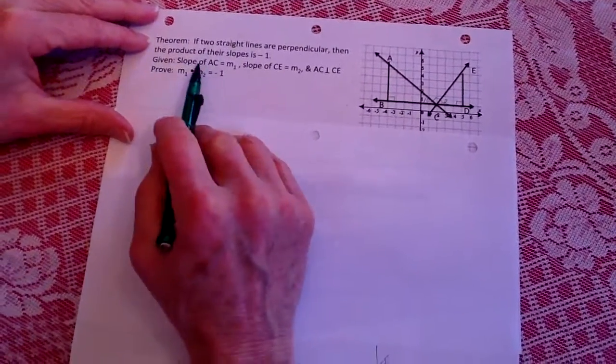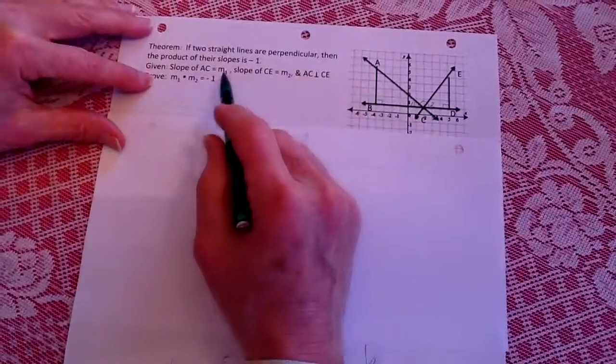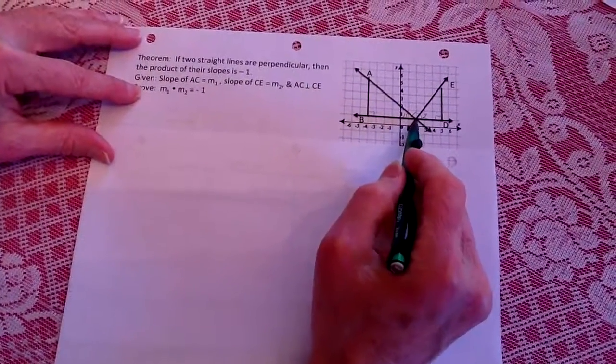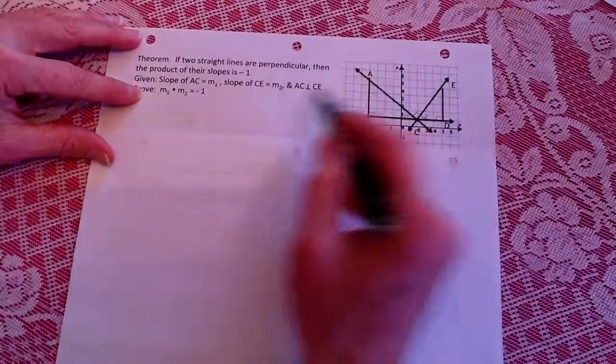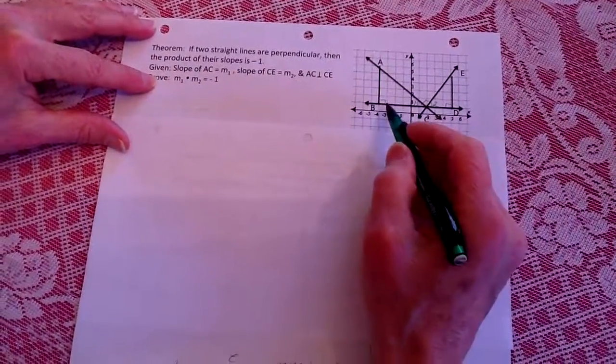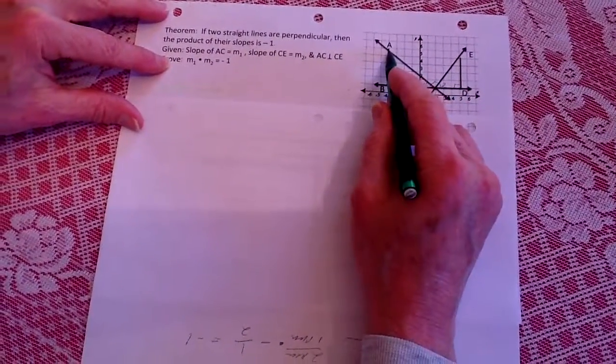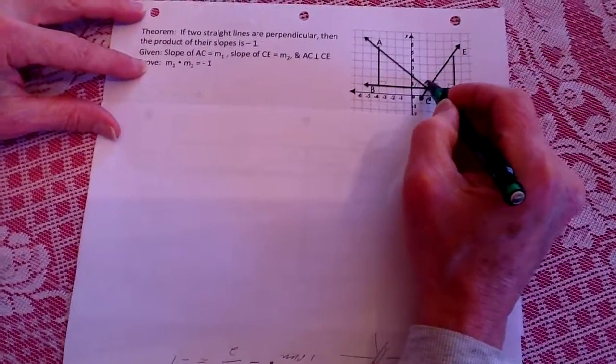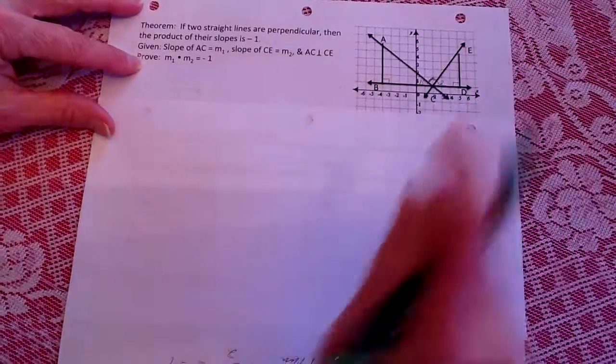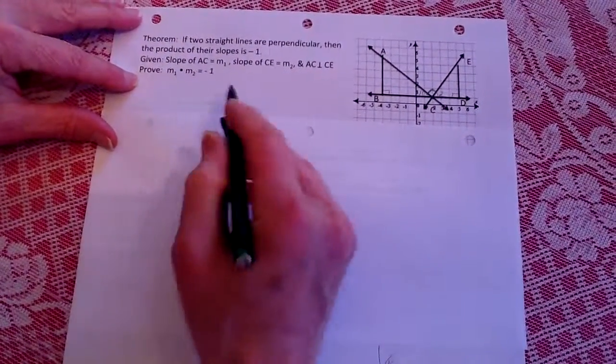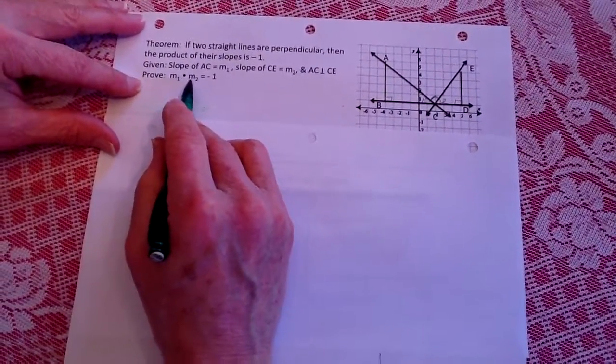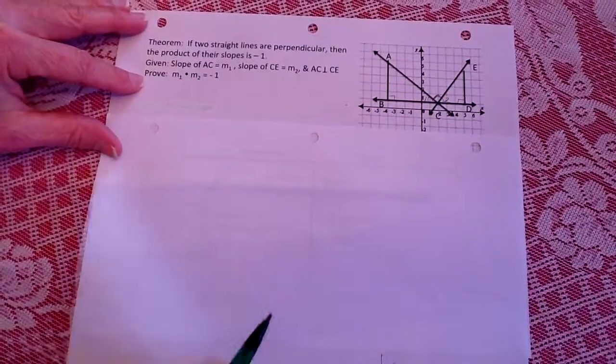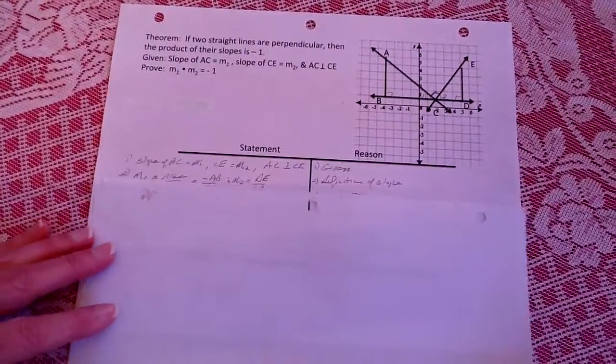So let's go about proving this. What we have given is the slope of AC is m1, the slope of CE is m2, and we know that this line AC is perpendicular to CE, and there's the right angle right there. So we're going to be proving that the slopes m1 times m2 is going to end up being a negative one.